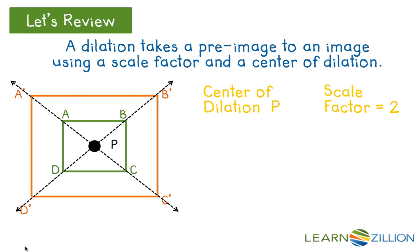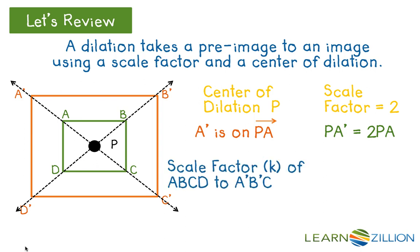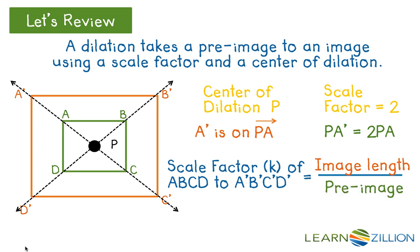You should notice that the vertices of A and A' are on the same line going through the center P. In other words, A' is on the ray PA. You should also notice that PA' is 2 times as large as PA. The scale factor K of A, B, C, D to A', B', C', D' is the ratio of the lengths of the corresponding sides of the image to the pre-image.